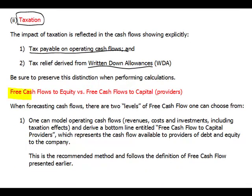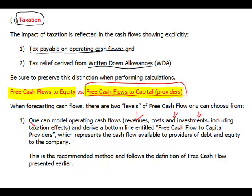Now for the important split: free cash flows to equity versus free cash flows to capital providers. What we've been discussing is free cash flows to capital providers — revenues minus costs, investments, tax, and working capital movements. It's called 'capital providers' because it covers both equity and debt providers. In this case, you're calculating the net present value for both of these capital provider groups.